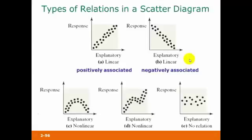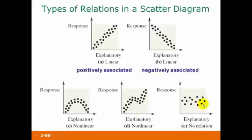Some other types of relationships we can see from scatter diagrams: in this one, it looks like there's a relationship but it's not linear — it doesn't have a straight line pattern. This one also shows some type of a relationship, but it would not be a linear one because this is not a straight line pattern. And in this last one on the right, there doesn't seem to be any relationship between the variables, linear or not.